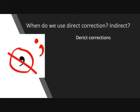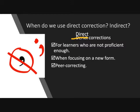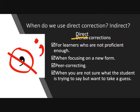Do we correct these errors directly or indirectly? Direct corrections are for learners who are not proficient enough — if they can't figure it out on their own. It's for learners who are focusing on a new form. Any time they're doing peer corrections, they should be doing it directly. And when you're not sure what a student is trying to say but you want to take a guess, it's always better to be safe and give them a direct correction as a good model.